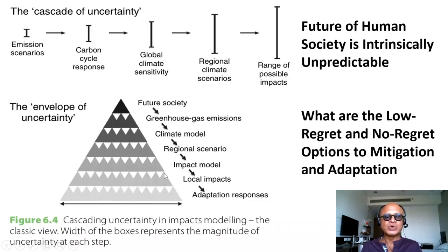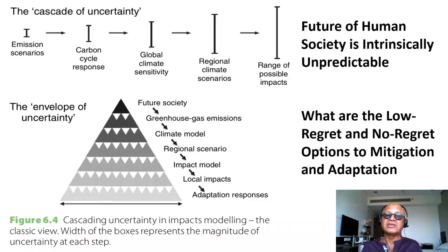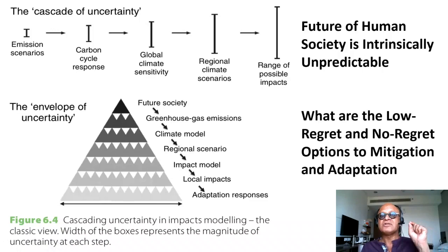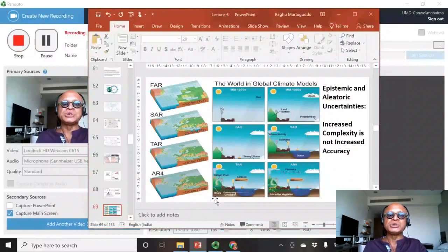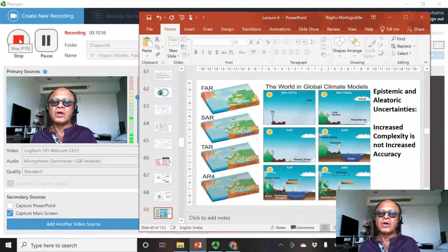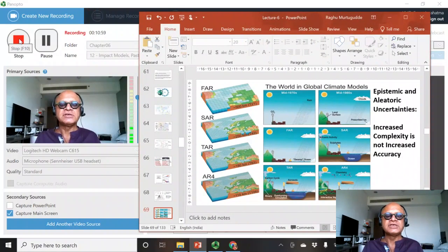The envelope of uncertainty is shown in terms of the range of adaptation responses, starting with future society — its population, technology options, carbon capture and sequestration, renewable energies, and transportation options — determining greenhouse gas emissions, feeding into climate models, regional scenarios, and impact models, down to local impacts. Adaptation is all local and requires reliable information at local scales, which is the challenge the IPCC faces. This is being done as comprehensively as possible, and we'll see briefly how these things have evolved over time.